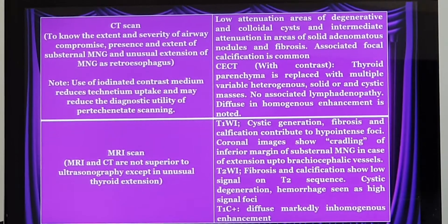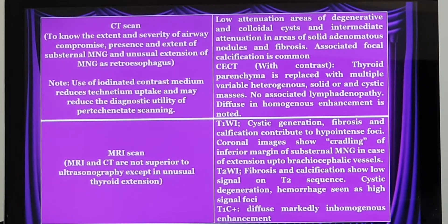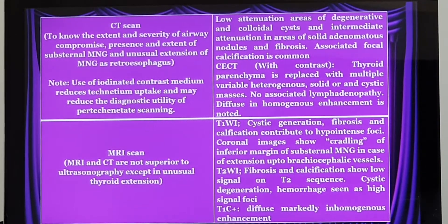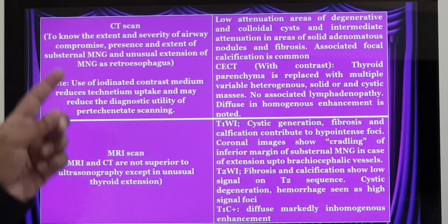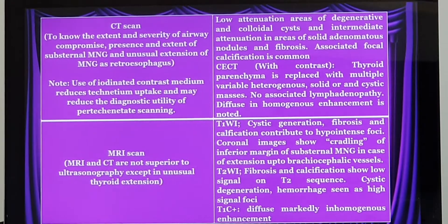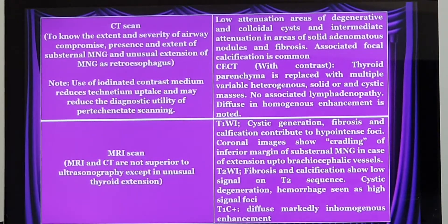The contrast given in CT is iodine-based. Suppose after surgery for multinodular goiter the biopsy report comes as malignancy — in that case we need to further investigate with an iodine scan. Since we already did a CT scan with iodine-based contrast, the further investigation with an iodine scan after surgery will get delayed. So we prefer to do an MRI scan instead.